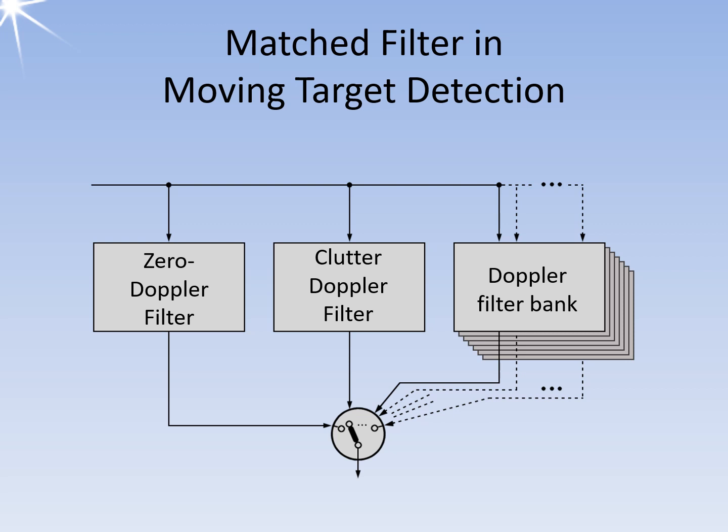In moving target detection systems, the zero Doppler filter is a matched filter with low-pass behavior, which filters out classic fixed targets. Here, echo signals are detected and suppressed which have a waveform identical to the transmitted signal.